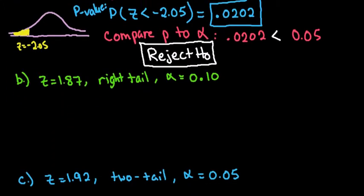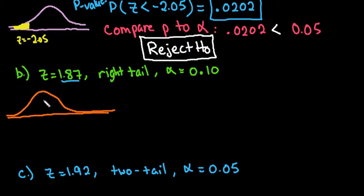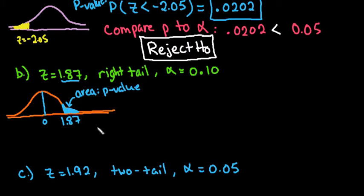Looking at the next one, we have z equals 1.87. For this one, we're going to draw out our model. 1.87 is positive, which means it is to the right of the mean of 0. We're going to look for the area in this right tail — that area is going to be our p-value. You have two options, and I prefer the first one: look at the opposite z-score.